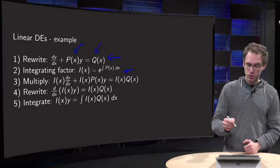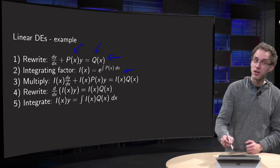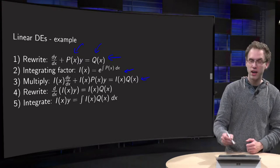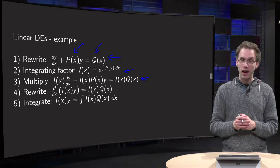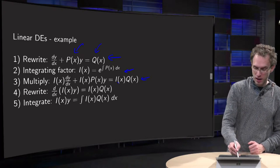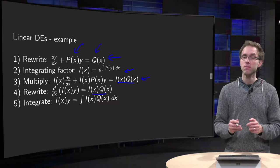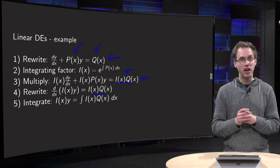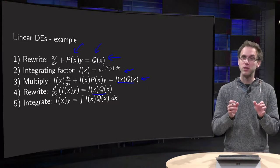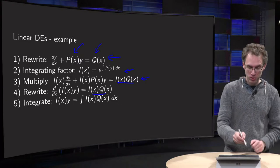Then third step, multiply your equation left and right with the integrating factor I. That's standard. And then the trick step: you leave the right hand side as it is, but the left hand side, the sum of those two terms is the derivative of a single term.